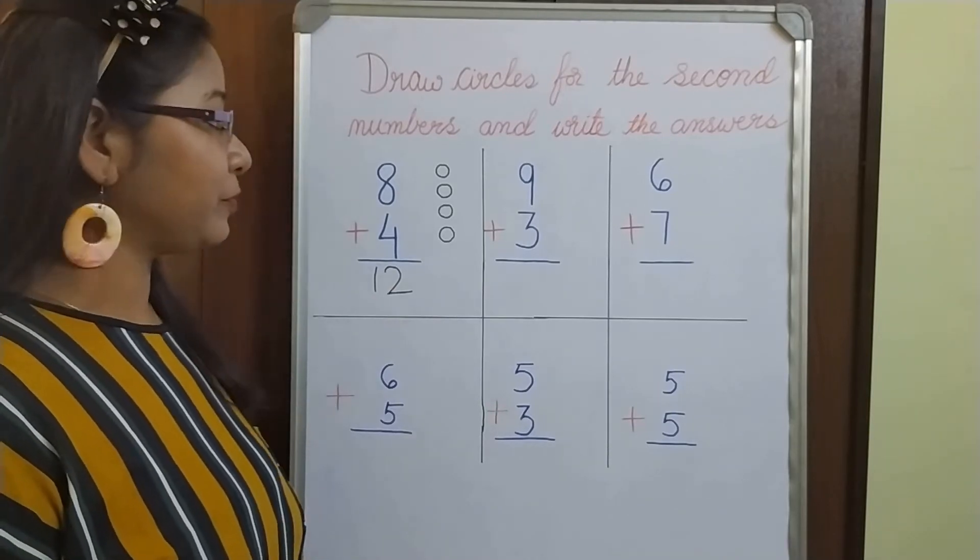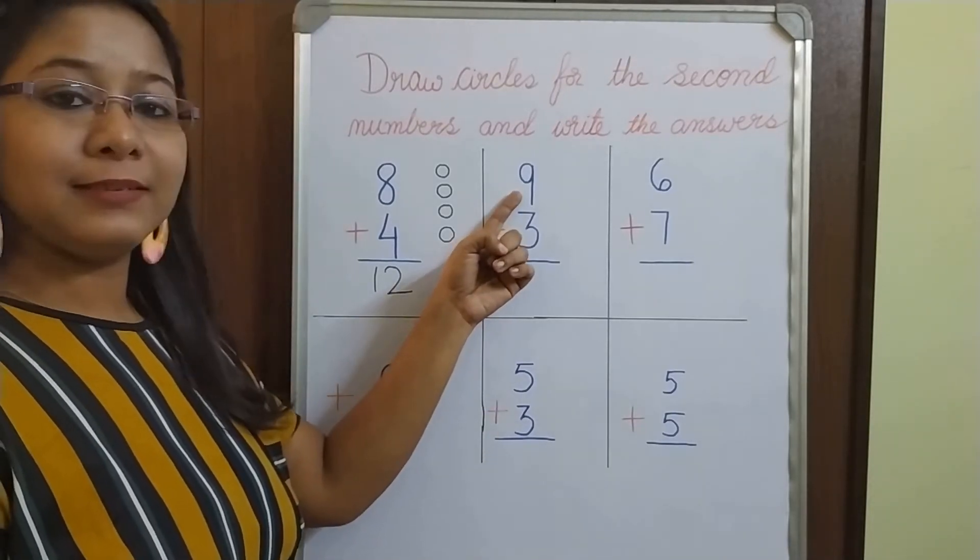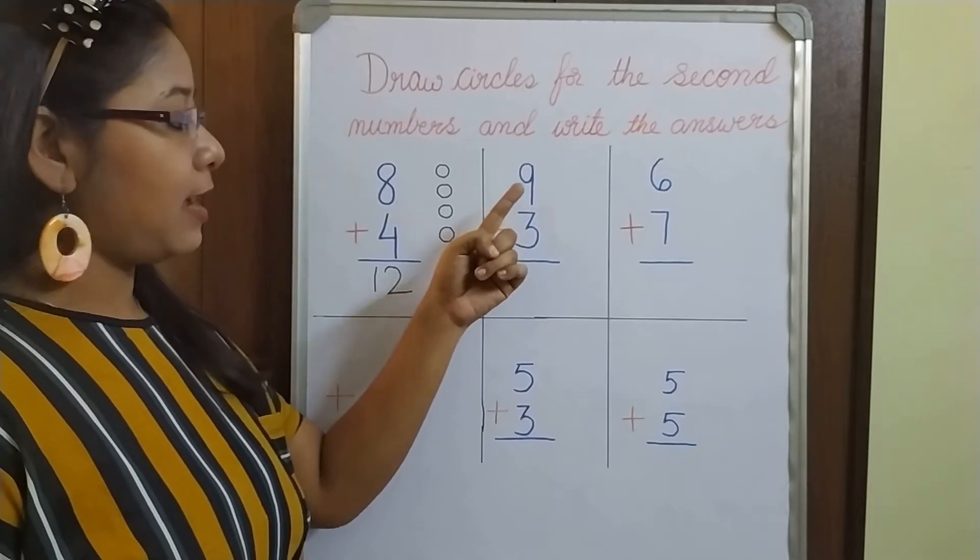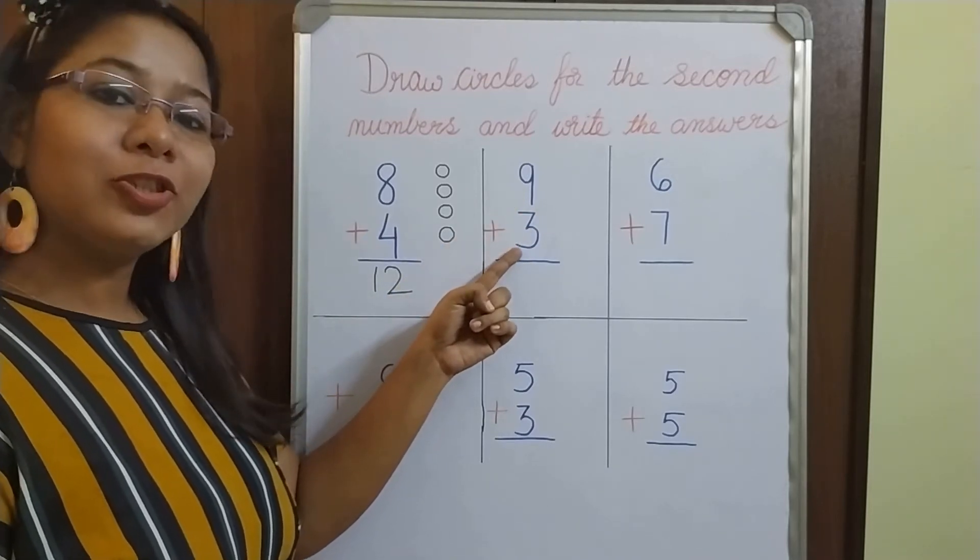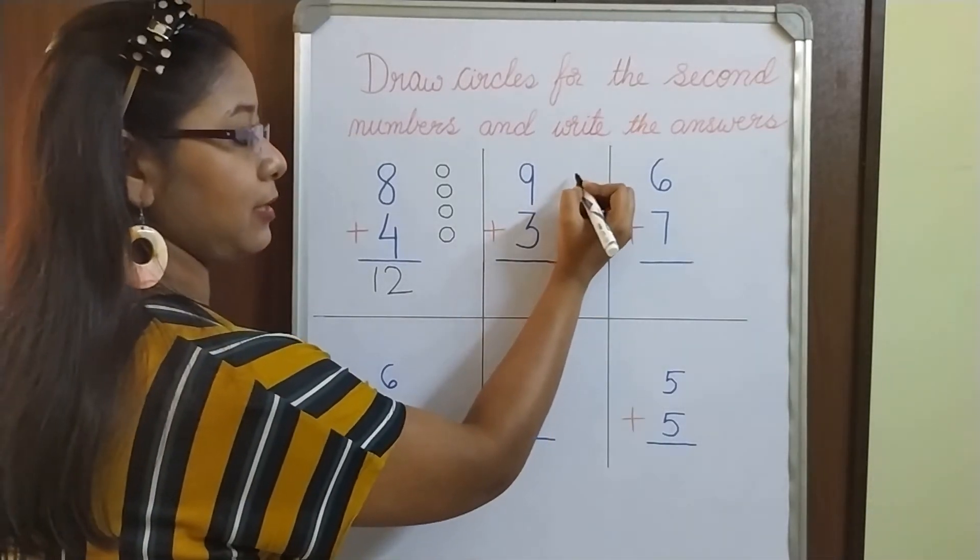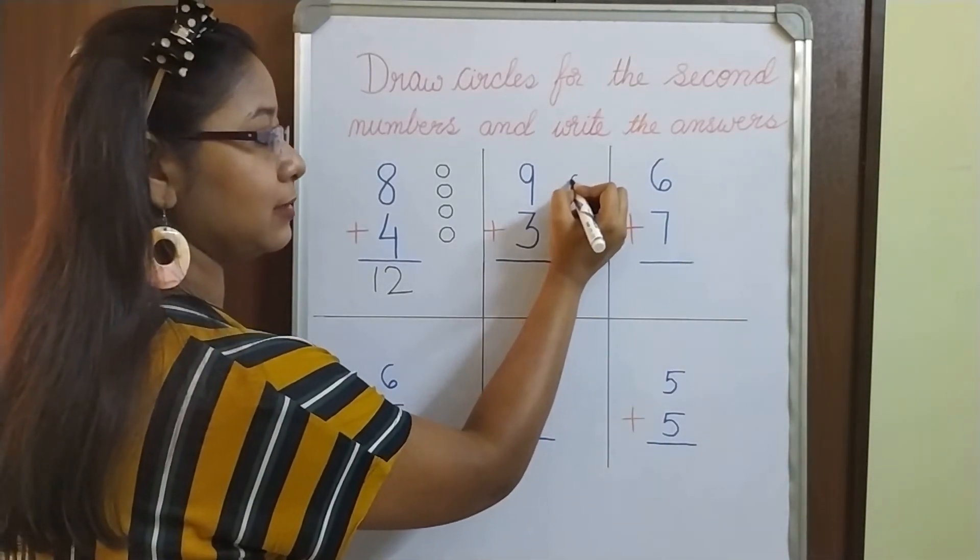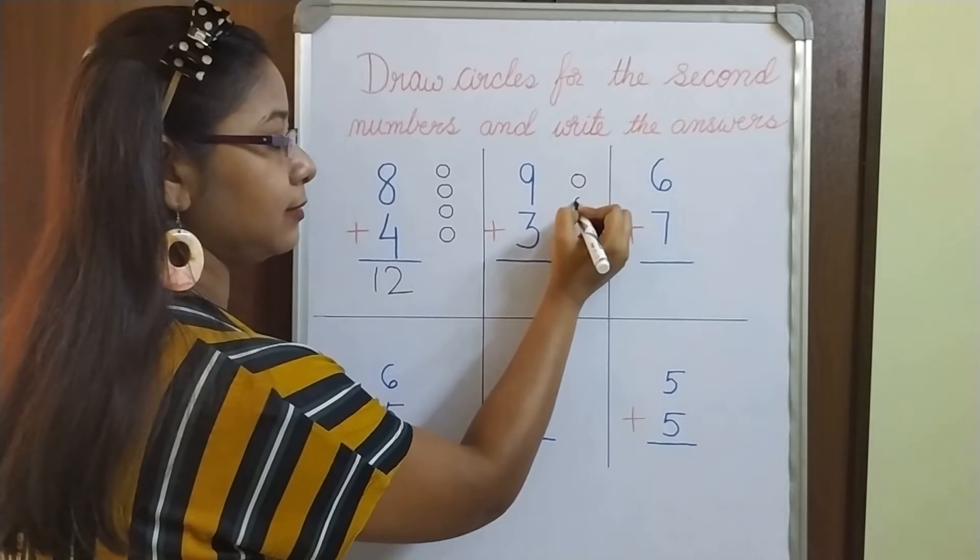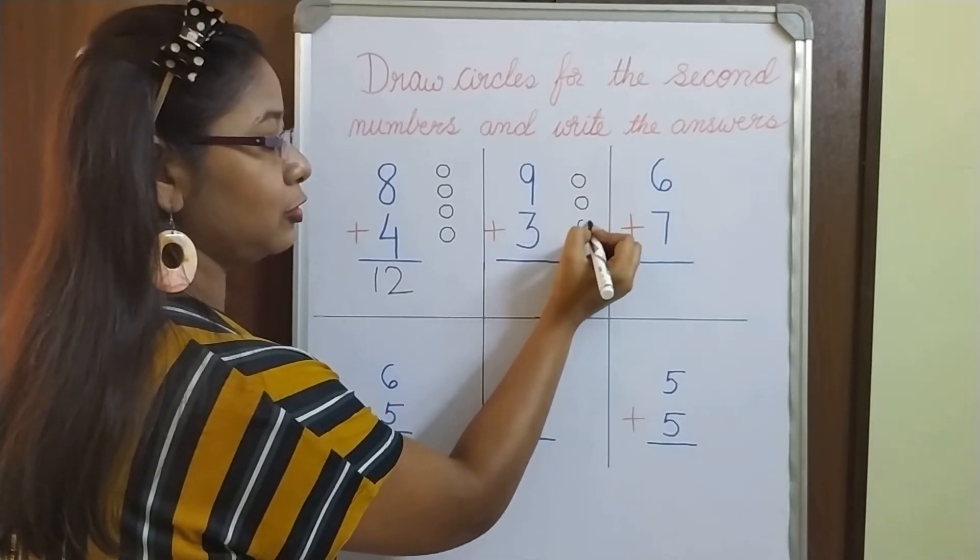Let's do the other one. Here the first number is? Yes, 9. And the second number is? 3. Very good. So here I will draw 3 circles. 1, 2, 3.